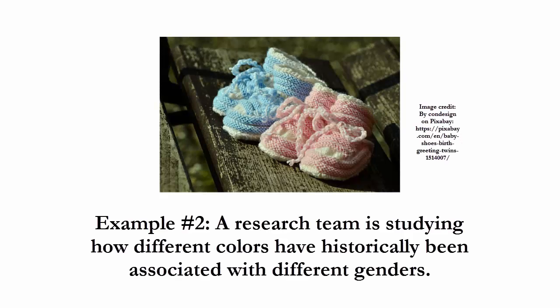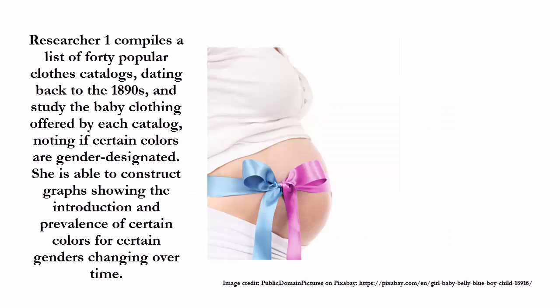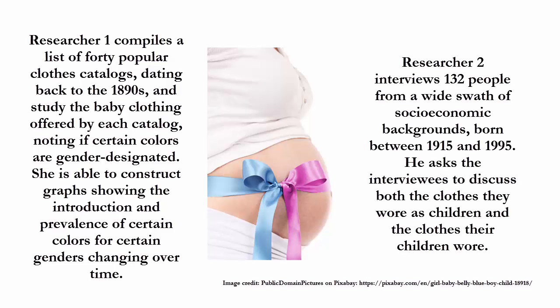In our next example, a research team is looking at how different colors have historically been associated with different genders. The first researcher compiles a list of 40 popular clothes catalogs dating back to the 1890s, looks at the baby clothing offered by each catalog, and notes if certain colors are designated to a particular gender. Using this information, she constructs graphs showing the introduction and prevalence of certain colors for certain genders changing over time. The second researcher interviews 132 people from a wide variety of socioeconomic backgrounds born between 1915 and 1995, asking them to discuss both the clothes they wore as children and the clothing their children wear, if applicable. Take a few seconds to decide if each method is quantitative, qualitative, or if you need more information.